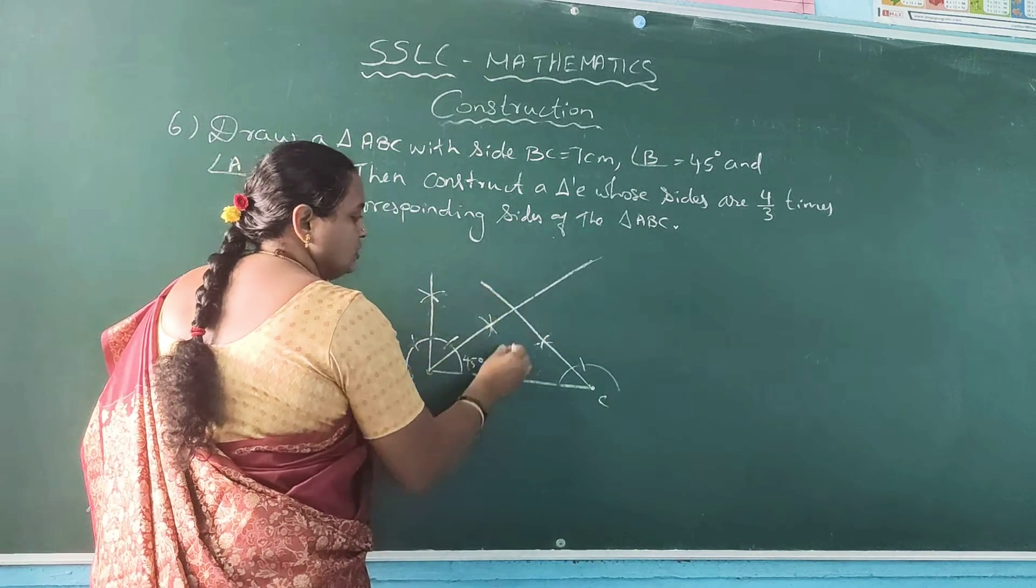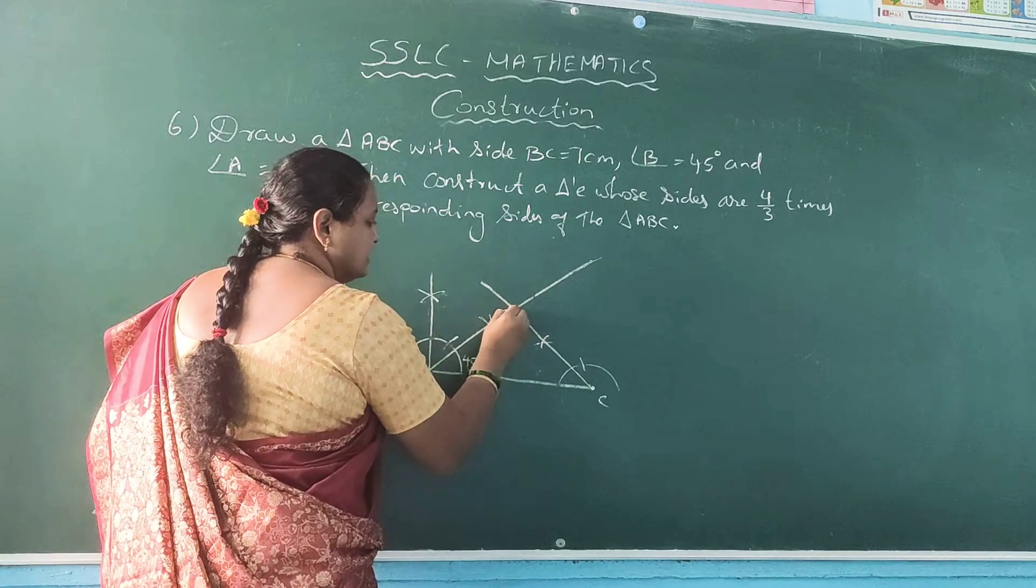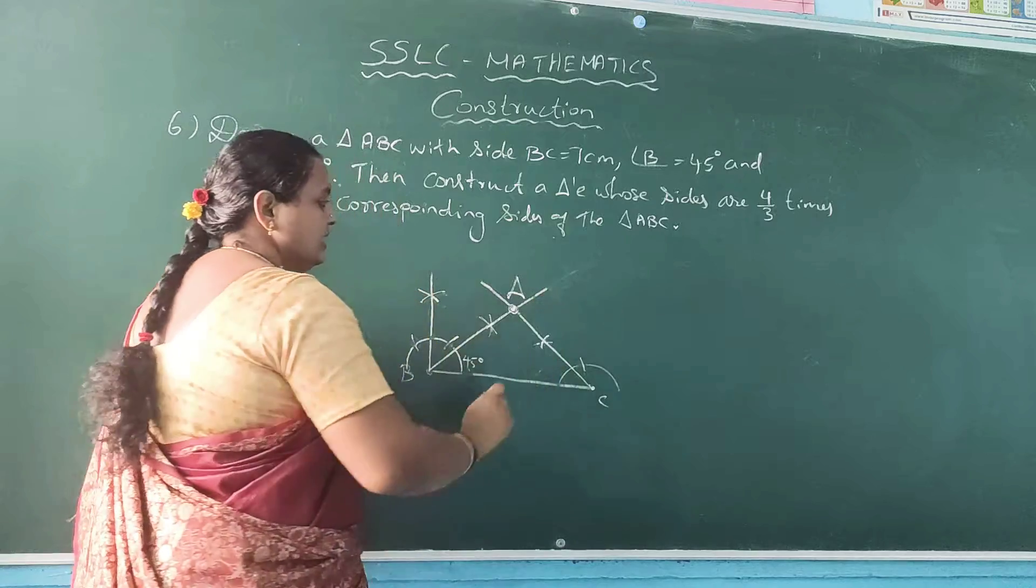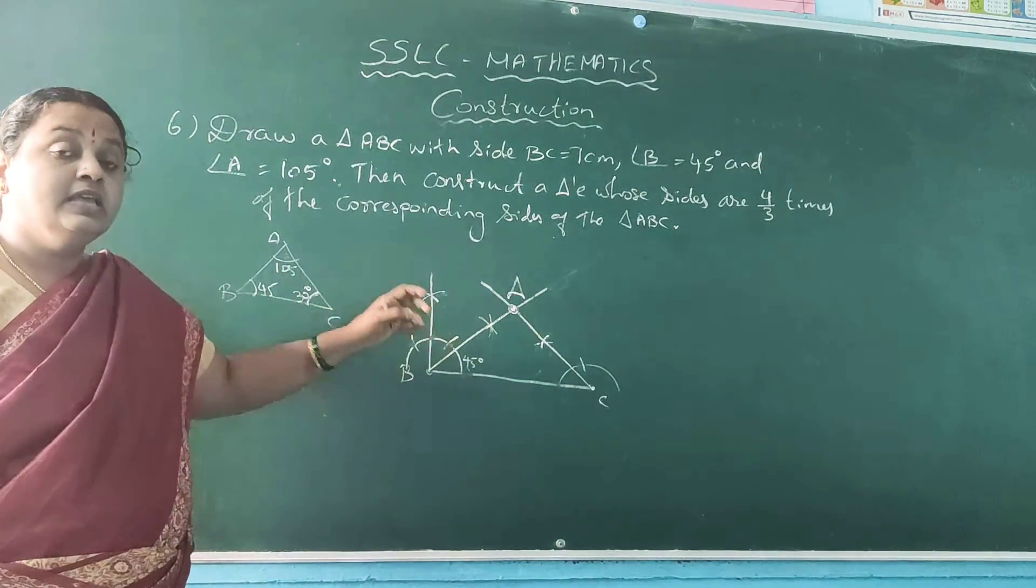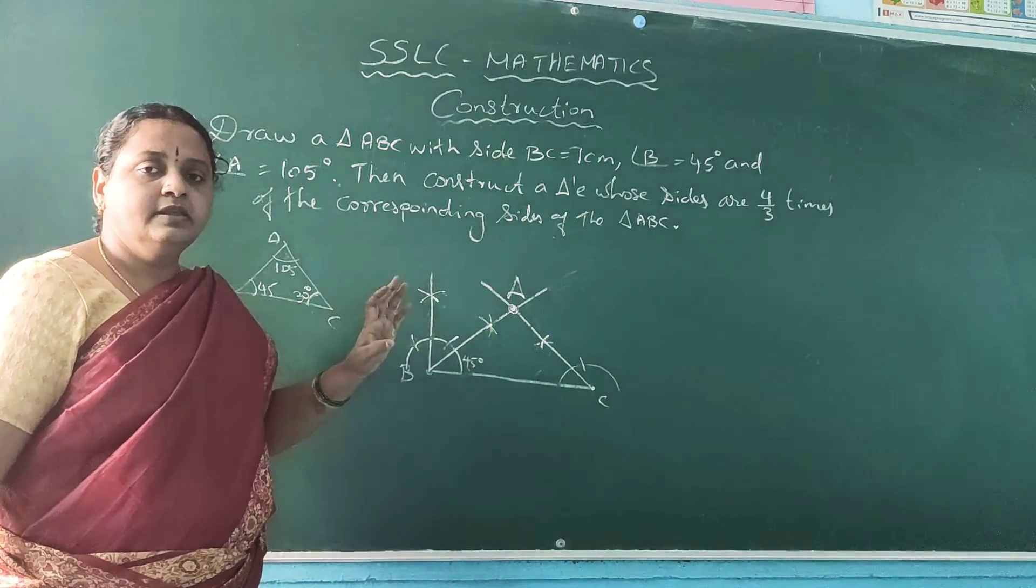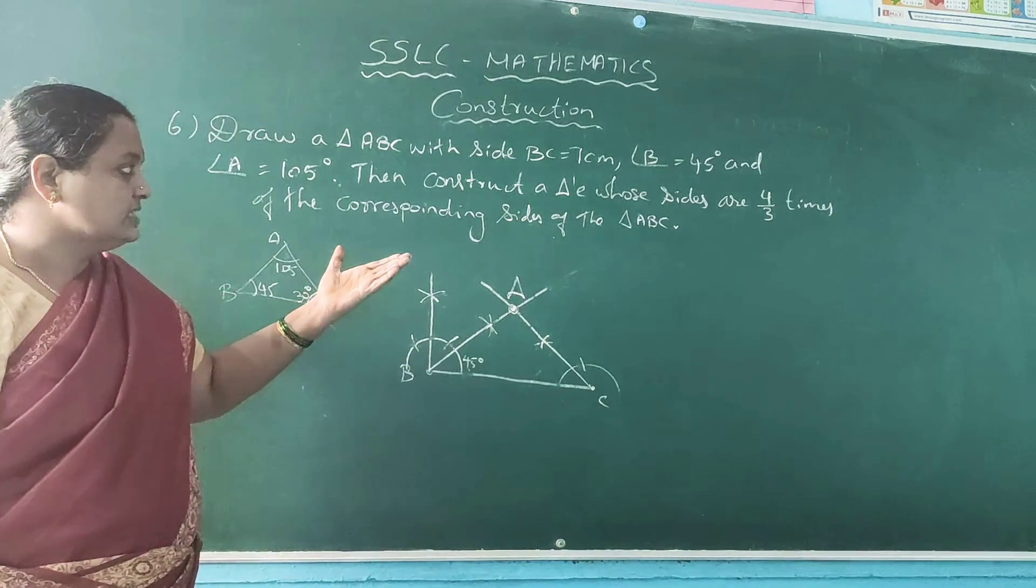Draw a straight line so that these two lines will intersect here. This is nothing but A. Now we have found out A. If you keep your protractor and measure this angle, this angle will be 105 degree. Then what is the next step?